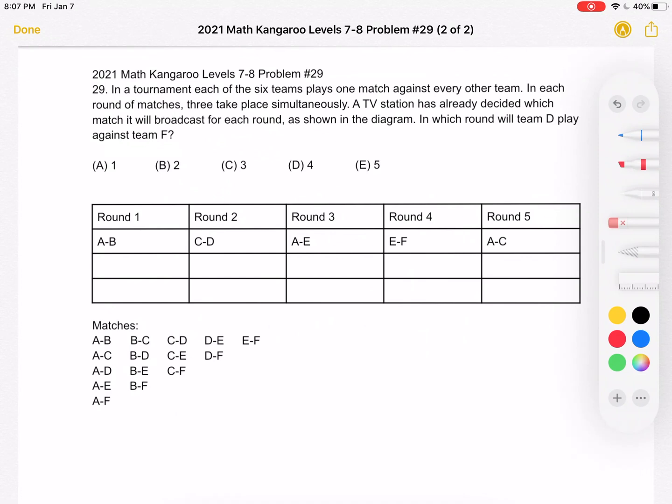So just a quick recap. Again, we have five different rounds with three matches taking place in each round, but our TV station is only going to broadcast one match for each round. So for example, the TV station will broadcast A,B in round one, C,D in round two, A,E in round three, and so on. So these are the five matches that will be broadcasted, one per round. And we're trying to figure out in which round will Team D play against Team F.